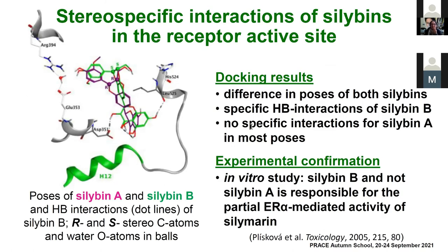We did observe differences in the interactions of silibin A and B in the binding site, suggesting stereospecific interactions. In most cases, we recorded hydrogen bond interactions for silibin B and no specific interactions for silibin A. We found experimental confirmation in a published study stating that silibin B — not silibin A — is responsible for the partial agonist-mediated activity in relation to the estrogen receptor alpha of silimarin, explaining at the molecular level the experimentally observed differences.